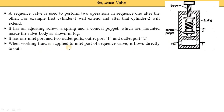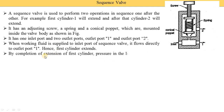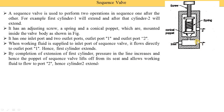When working fluid is supplied to the inlet port of the sequence valve, it flows directly to outlet port one and the first cylinder is extended. Oil is supplied from a pump to the inlet port, then from the inlet port it is supplied to outlet port one, and from outlet port one it is supplied to cylinder one, so cylinder one extends. When extension of the first cylinder is complete, pressure in the line increases — the oil comes back and the pressure increases, causing the conical poppet to move upward.